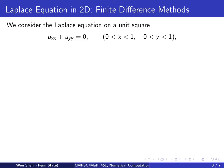Let's consider the Laplace equation in two-dimensional space. The equation takes this form: u_xx plus u_yy equals zero. Here the subscript xx denotes the partial derivative with respect to x, so u_xx means partial squared u over partial x squared. The same meaning is for this partial derivative. We consider a unit square where x lies between zero and one, and y lies between zero and one.